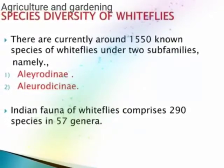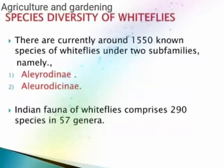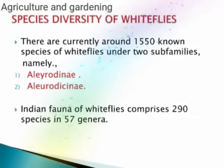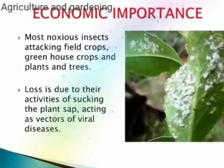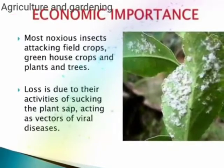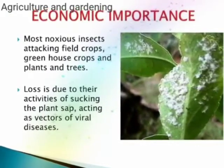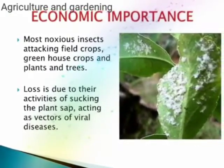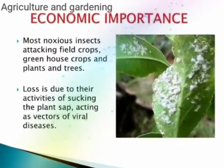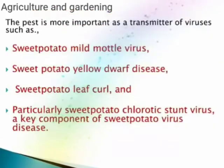There are currently around 1,550 species of whitefly under two sub-families. Of common importance, whitefly attacks mostly greenhouse crops, plants, and trees, causing losses due to their activity on different parts.